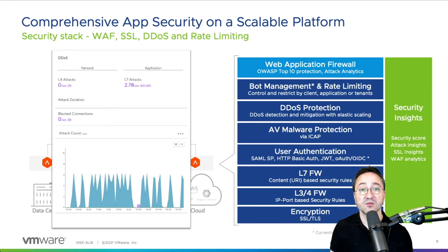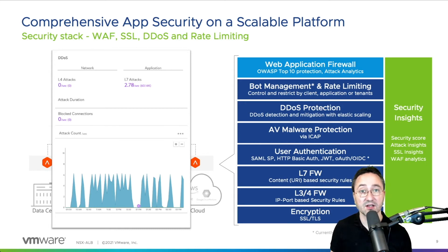As an important mitigation technique, advanced rate limiting is available anywhere on the platform. It can be configured as a firewall action, a WAF analytics result, or even as a DataScript engine, where fully user-defined scripts can interact with the traffic.